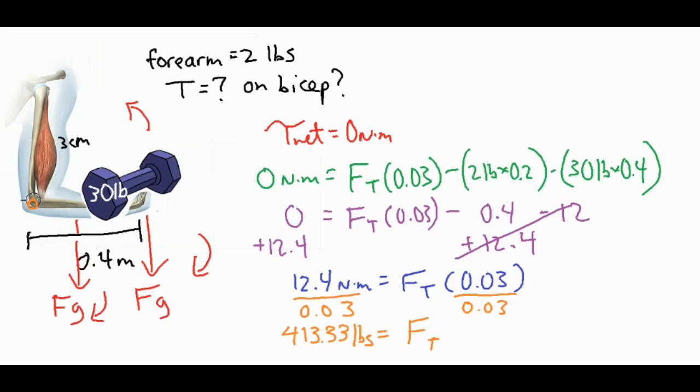Now I left everything in pounds, which is unusual, but that just means that our answer is going to come out in pounds. And if we choose to convert into newtons later, we can go ahead and do that. So I did all the calculations in pounds and meters, and then I got this value over here. So actually this would not be a newton meter, it would be a pound meter. And then when I divide both sides by 0.03 meters, then I get 413.33 pounds. So that is actually pretty shocking that the bicep has to produce that much force in order to curl up a 30-pound weight, because it's located that certain distance from the pivot point where the elbow is.